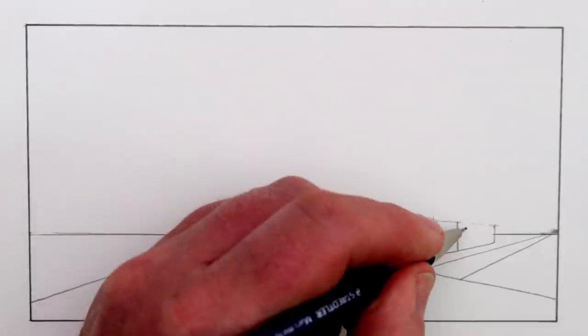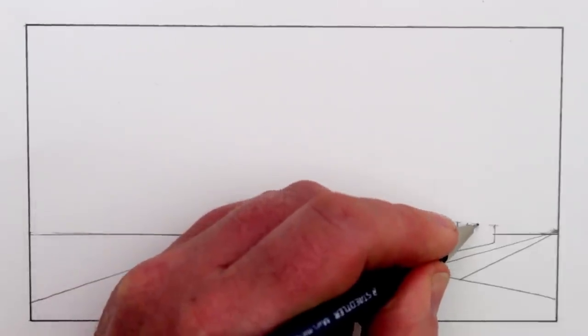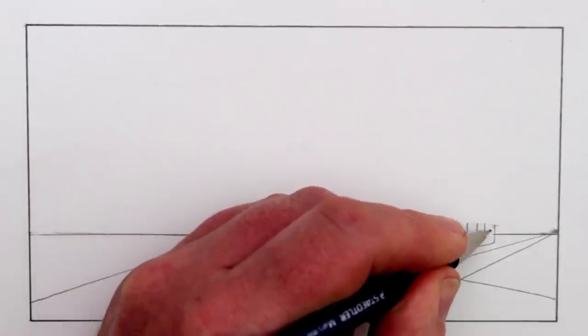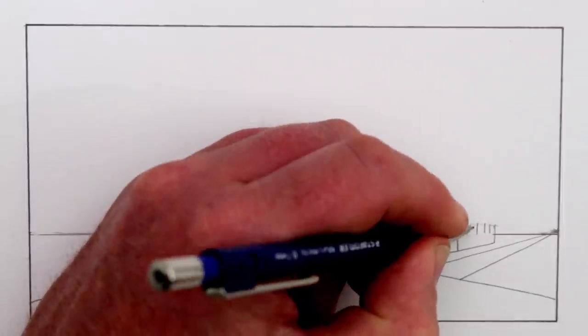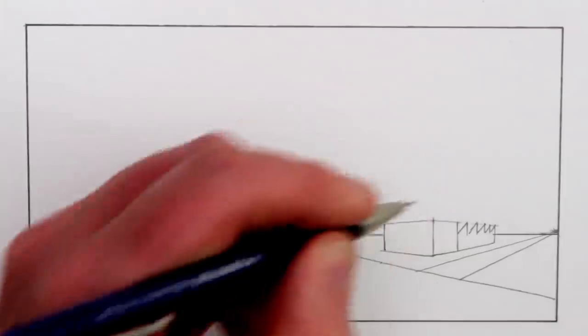For this far building I'll add a zigzag roof. For this, the left-hand lines will all go to the vanishing point on the left.